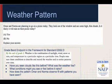Omar and Norma are planning to go on a picnic today. They look out of the window and see some high, thin clouds. Is it likely it will rain on their picnic today? Yes or no? Explain your answer. The grade band endpoint for standard ESS2.D: by the end of grade 2, weather is a combination of sunlight, wind, snow or rain, and temperature in a particular region at a particular time. People measure these conditions to describe and record the weather and to notice patterns over time.